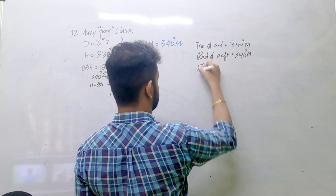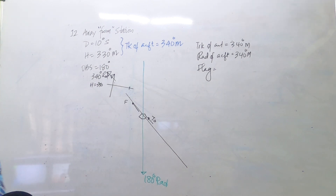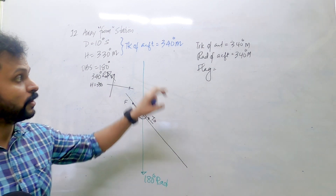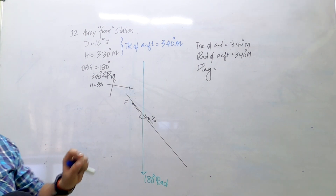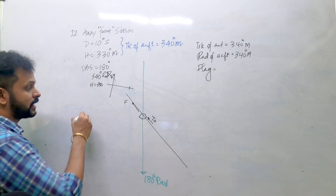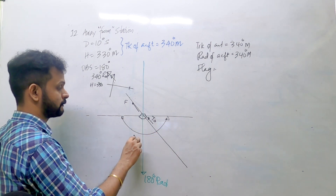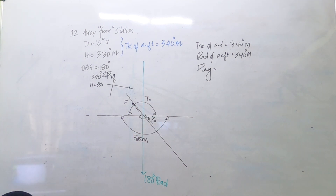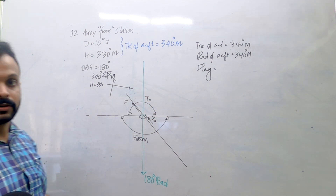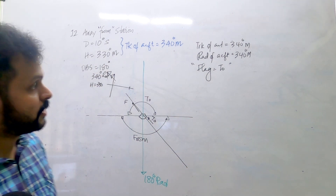Now what is the flag? We are going away from the station, and the OBS setting is 180°. Be very careful — when thinking about the flag, it has nothing to do with whether you're moving towards or away from the station. It is about your sensing position. To find the flag, draw the perpendicular radials — identify the head side and tail side. The aircraft is on the tail side, so the flag is simply TO — irrespective of direction of movement.